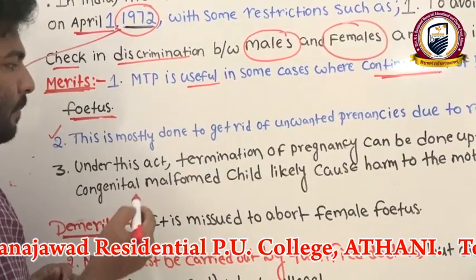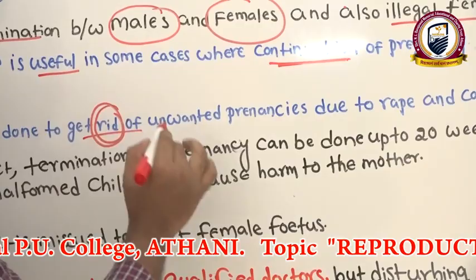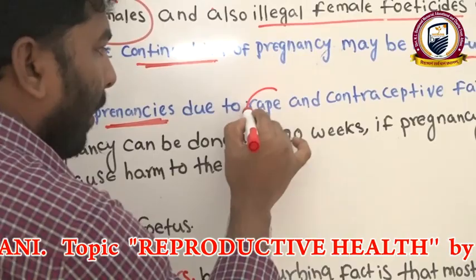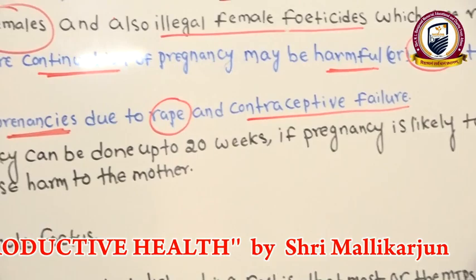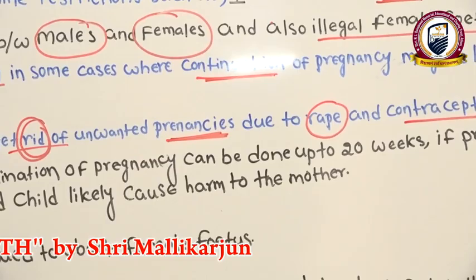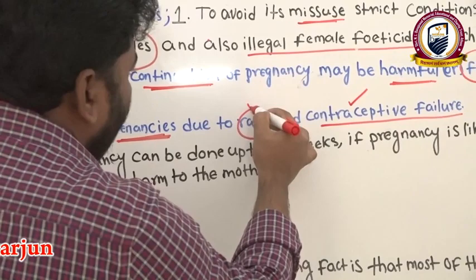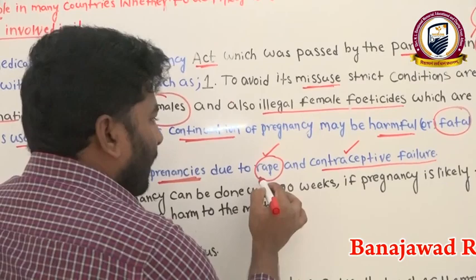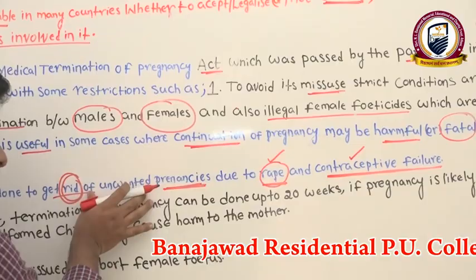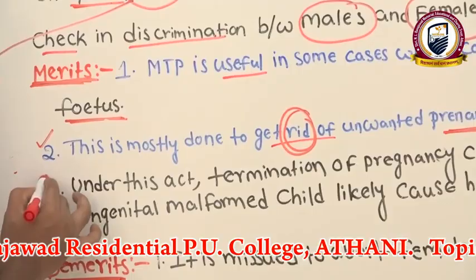MTP is mostly used to get rid of unwanted pregnancies resulting from rape or contraceptive failure. When a contraceptive breaks down during sexual contact, or in rape cases, MTP is essential to remove the unwanted pregnancy.